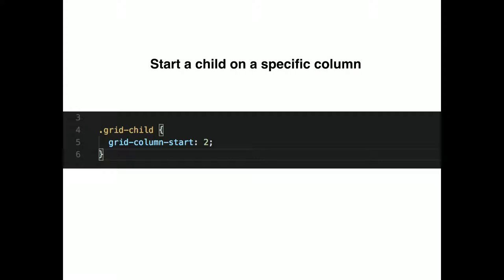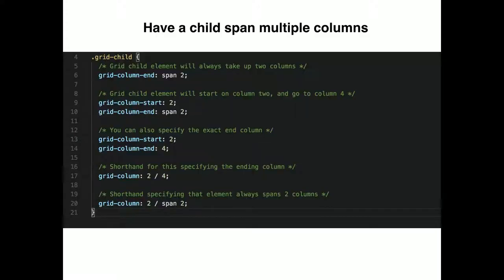Grid-column-start: 2 means the first child starts on column two — then the next children go to three, four, and so on, leaving a gap unless you have grid-auto-flow: dense. You can also have a child span multiple columns using grid-column-end. You can say grid-column-start: 5, grid-column-end: 8, and it will span five, six, and seven. Or you can use 'span 4' to span four columns total.